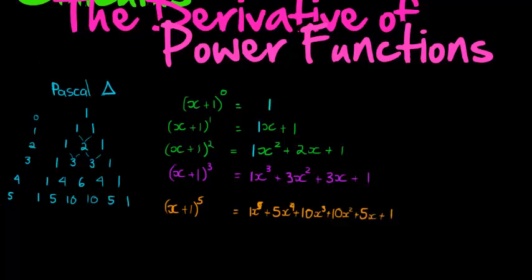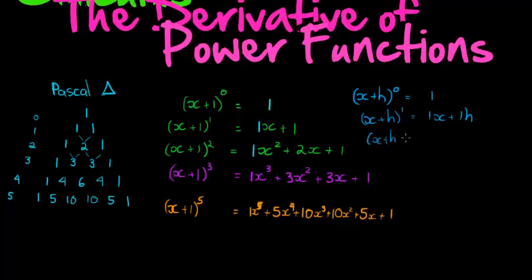Now let's look at what happens if we change this to be (x+h) instead. (x+h)^0 = 1. (x+h)^1 = x + h, with coefficients 1 and 1. (x+h)^2 = x² + 2xh + h². What I want you to notice is that this is x²·h⁰ + 2x¹·h¹ + x⁰·h².